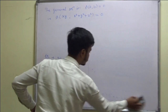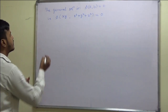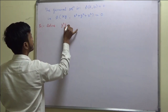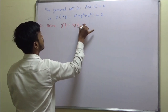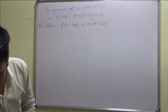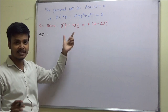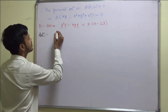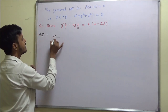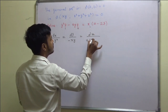Let us take another example. Solve: y²p - xyq = x(z - 2y). This is of the form P·p + Q·q = R. The auxiliary equation is dx/y² = dy/(-xy) = dz/(x(z - 2y)).